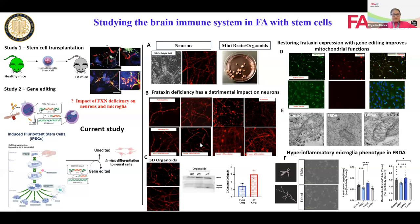Good evening everyone. I'm a postdoc in Dr. Stephanie Cherqui's lab. I'm going to present our past and current work. Previously, we did stem cell transplantation and showed that a single infusion of wild-type hematopoietic stem cells into the FA mouse model rescues the FA phenotype. We also noticed that these hematopoietic stem cells cross the blood-brain barrier, go to the brain, and differentiate into microglia-like cells. These microglia cells are transferring frataxin protein - which is deficient in Friedreich's ataxia - to the neuronal cells, essentially making the neurons healthy.